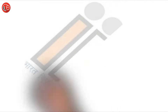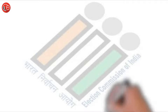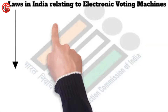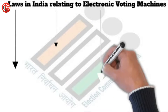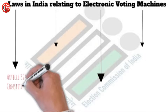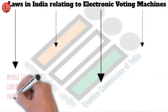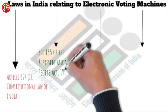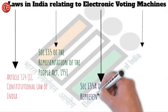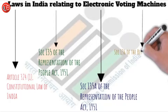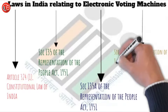Now, let's have a look at the laws in India relating to electronic voting machines. Article 324 Clause 1 of the Constitutional Law of India talks about the power of superintendents, direction and control of the elections to both houses of the state legislature. Section 135A of the Representation of People Act 1951 says that booth capturing is an offense. Also, Section 136 of the Representation of the People Act 1951.